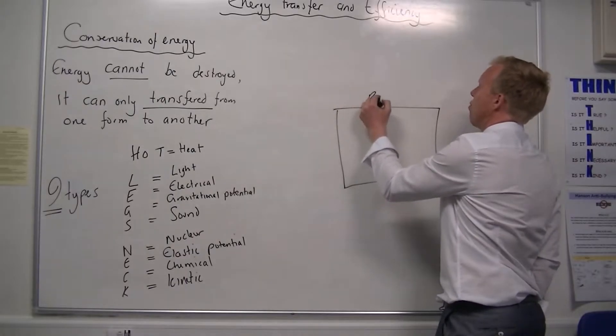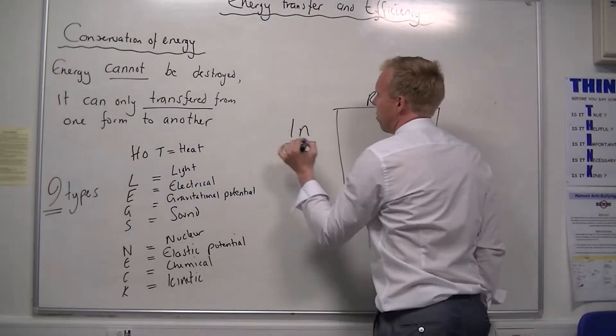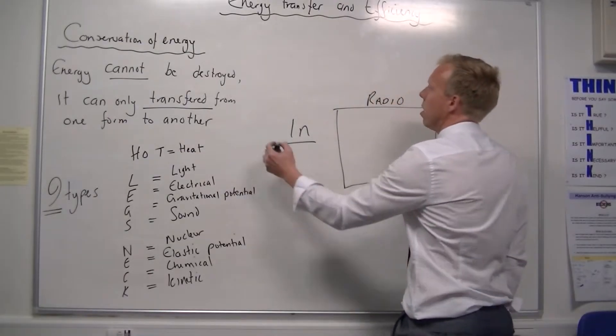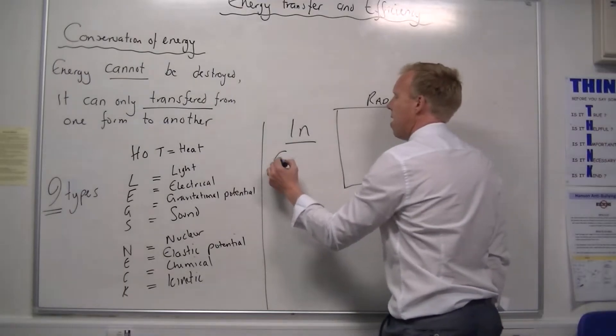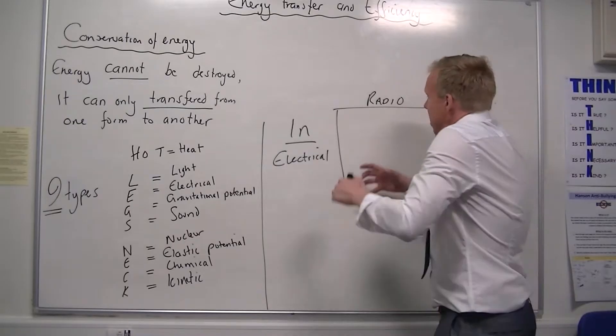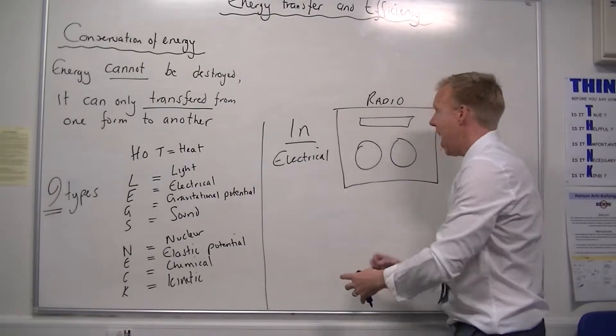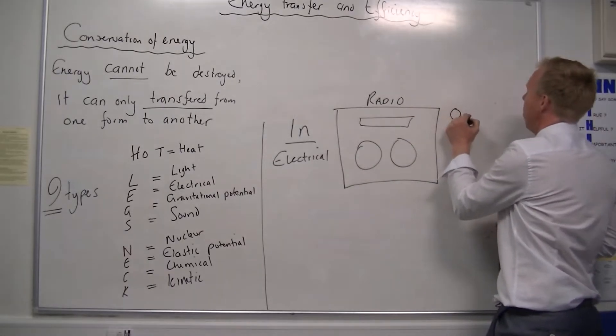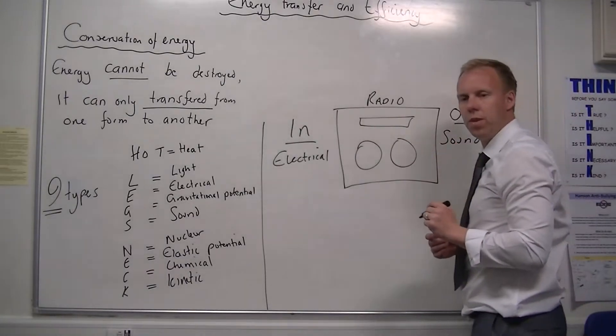If we have, and I'm going to call this a radio, we put energy into the radio. What type of energy goes into the radio? Electrical. So I'm going to just separate that off, so we don't get confused. But I put into that electrical energy. And the machine, let's put the little dials there and the speakers, the machine turns that energy into a different form. That's what machines do. And so what comes out of the radio is sound.